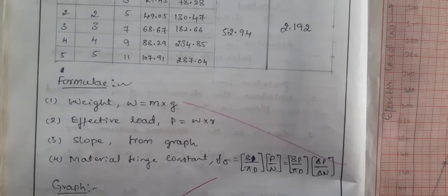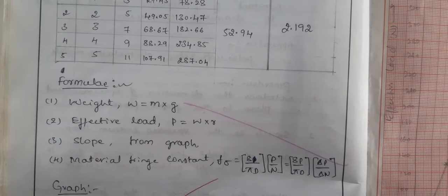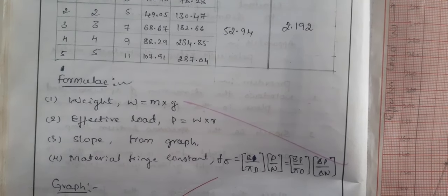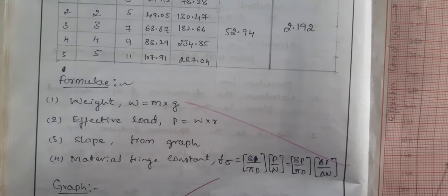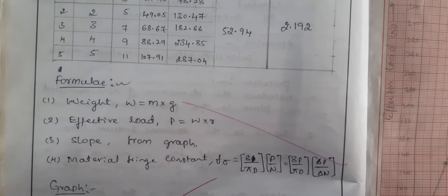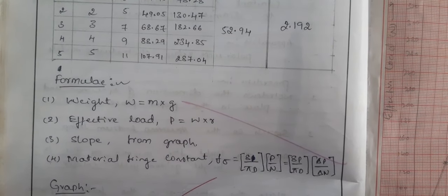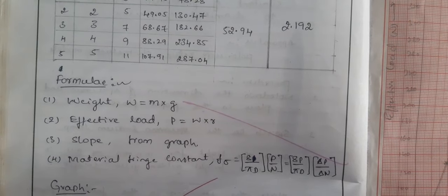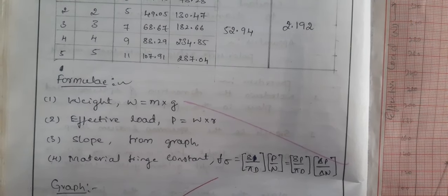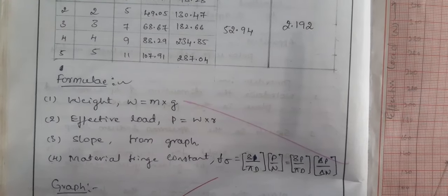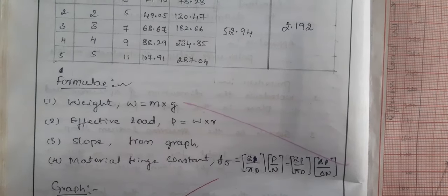The main aim of the experiment is to find out the material fringe constant f sigma, which is given as 8 divided by pi times d, multiplied by p divided by n. In summary, f sigma equals 8p divided by pi·d, where the slope delta p by delta n is obtained from the graph.